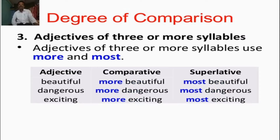Adjectives of three or more syllables use more and most. For example: Beautiful — more beautiful — most beautiful. Dangerous — more dangerous — most dangerous. Exciting — more exciting — most exciting. These are the three or more syllable adjectives.